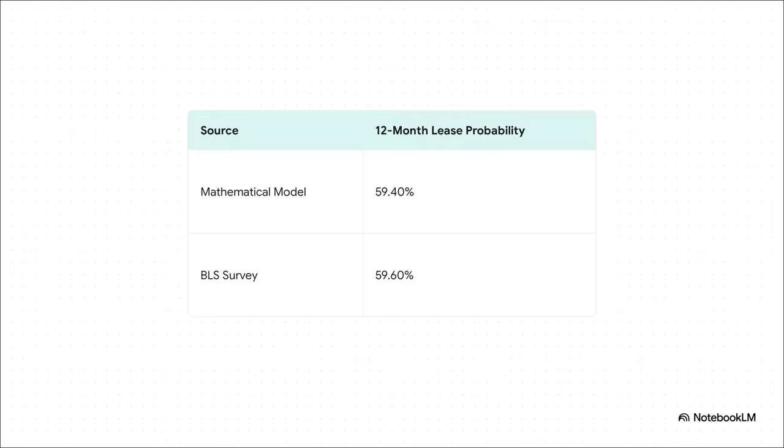And if you're thinking, okay, but that's just a theoretical model, well, check this out. This is how we know that number is legit. The mathematical model predicts 59.4%. Real-world data from the U.S. Bureau of Labor Statistics comes in at 59.6%. They are practically identical. This isn't a theory anymore. The math has just proven you have way less control than you think.